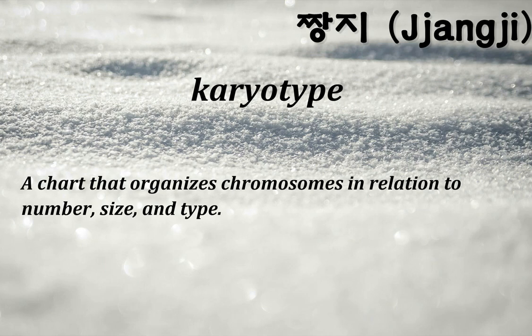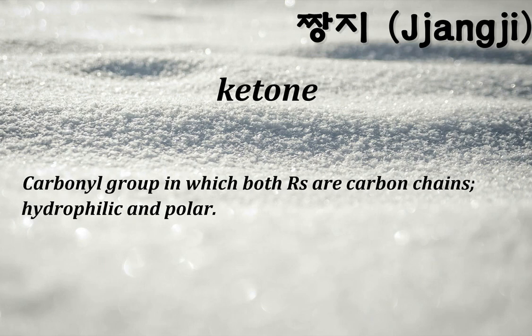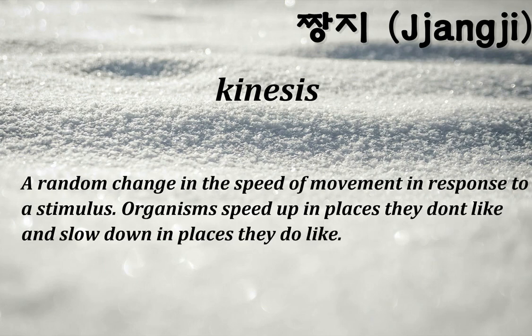Karyotype: a chart that organizes chromosomes in relation to number, size, and type. Ketone: a carbonyl group in which both R's are carbon chains; hydrophilic and polar. Kinesis: a random change in the speed of movement in response to a stimulus; organisms speed up in places they don't like and slow down in places they do like.